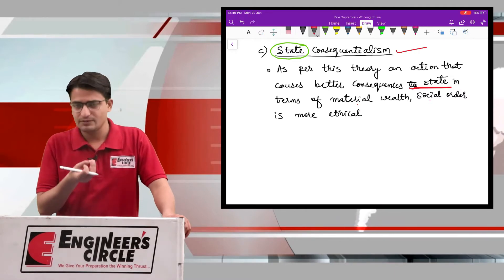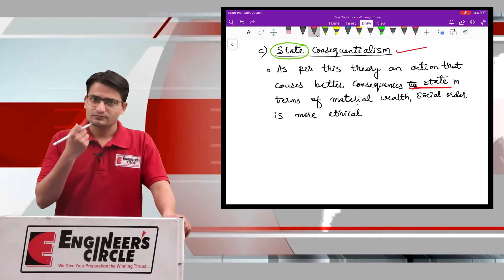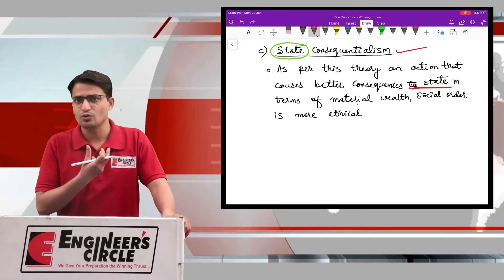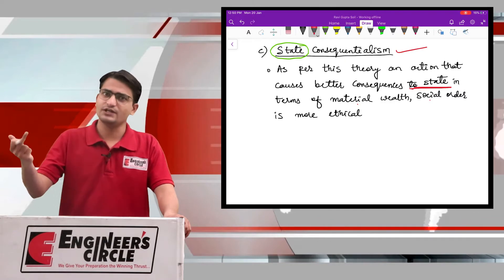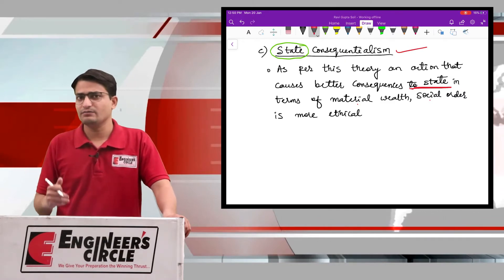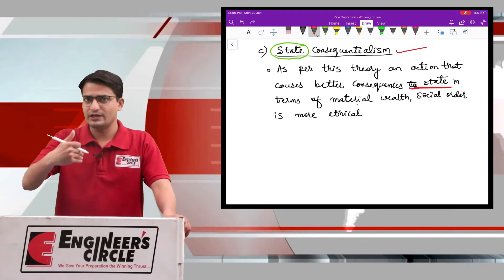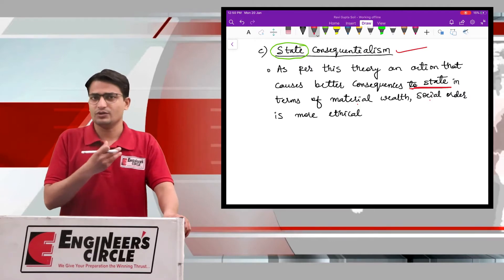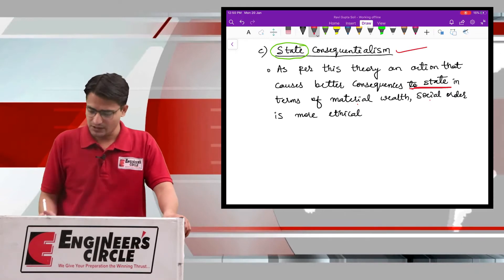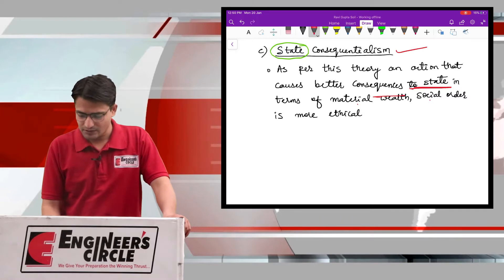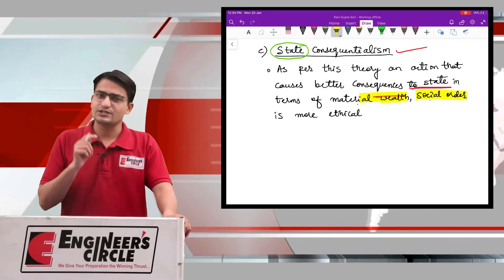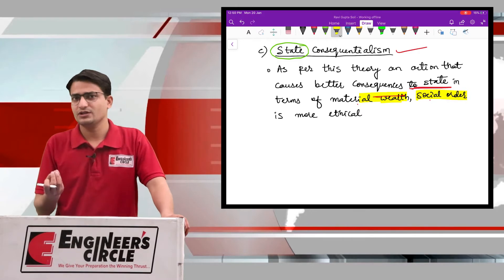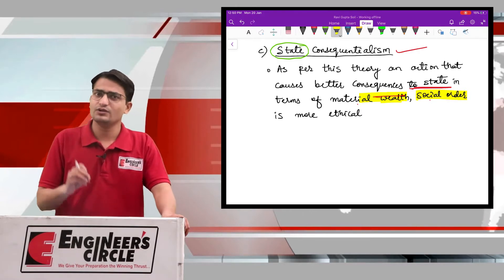Let us take an example where government wants to build a road or a railway line, and it is passing through some villages. Villages will get affected by this highway or railway because they will be required to displace from their own land. But on the other hand, overall state will get benefit because it is the duty of state to provide public transport. And when this will happen, the overall material wealth and social order will increase. That is why according to this theory, the state consequentialism theory, this action of highway or roadway construction is ethical, even though it is affecting some people.